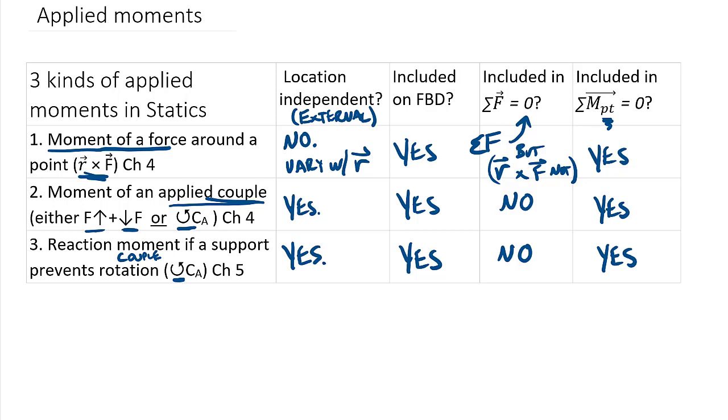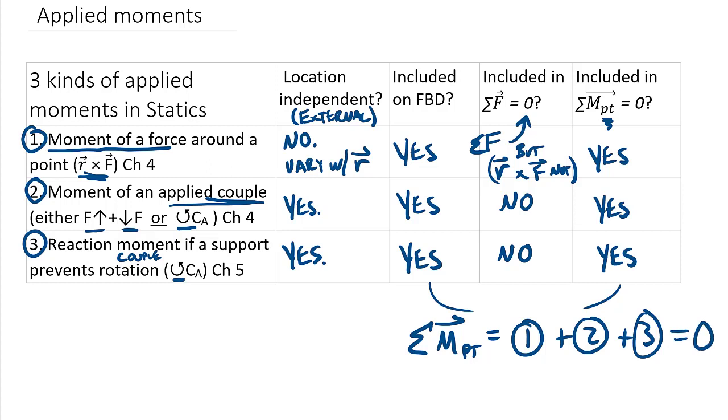And so really from both this column and this one, we could put that the sum of all moments about a point fundamentally comes from the addition of these three moments. So it's basically from one plus two plus three, and in statics we can set those equal to zero, because we have no acceleration. So this is our rotational equilibrium equation.